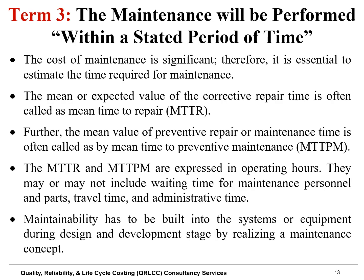Term three states that maintenance will be performed within a stated period of time or expected time interval. Since the cost of maintenance is significant, it is essential to estimate the time required for implementing maintenance interventions. The first time measure is the Mean Time to Repair (MTTR), which is the expected value of the corrective repair time. The second is the Mean Time to Preventive Maintenance (MTPM). Both are expressed in operating hours and may or may not include waiting time for personnel and spare parts, travel time, and administrative time. Overall, maintainability must be built into systems or components during design and development stages by realizing a maintenance concept.